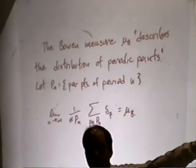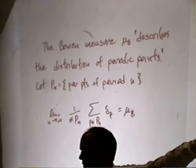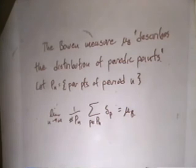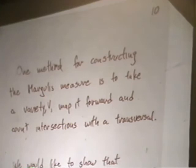The Bowen measure of some subset of the horseshoe gives the percentage of periodic points in that subset, in this sense. We would like to extend this theory from laminations to our turbulations. We need some alternate tools to do this — the hyperbolic techniques definitely do not work in our context.